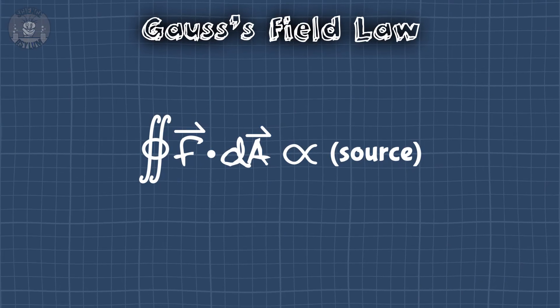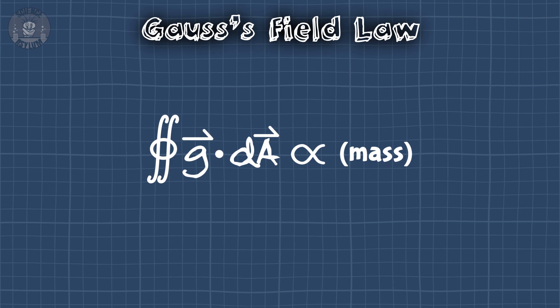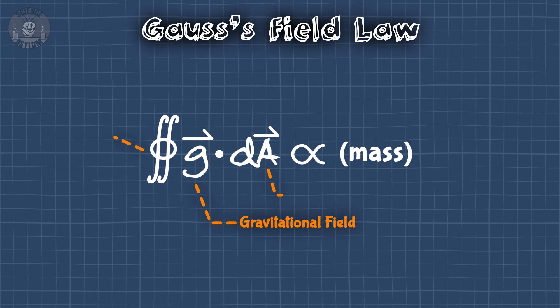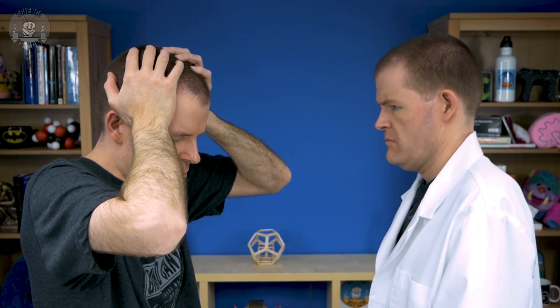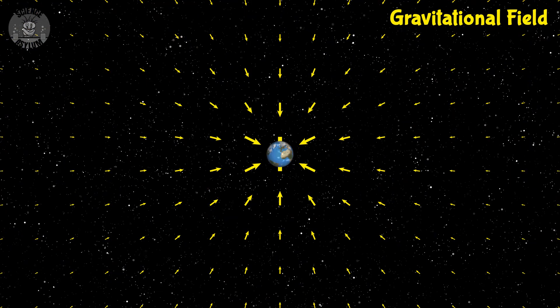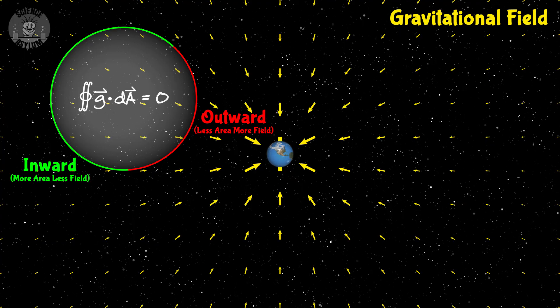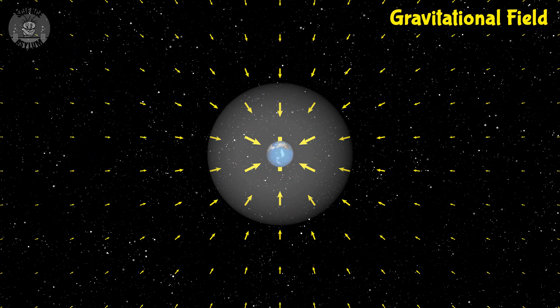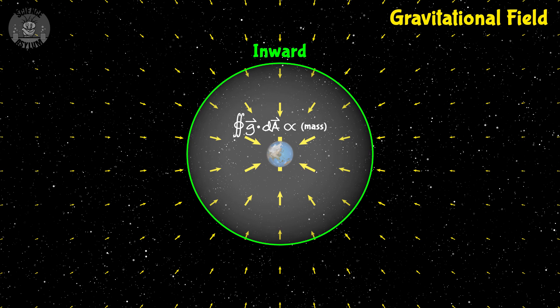A really convenient way to understand that connection is with Gauss's Law. In general, it's written like this — here's the field, a property of space, and here's whatever property is affecting that field. For gravity, it relates the gravitational field to mass. It says the gravitational field across some closed area, also known as flux, is proportional to the mass inside that closed area. Let's imagine that closed area is the surface of a sphere. If that sphere doesn't enclose any mass, then there's no flux across its surface — just as much field pointed in as pointed out. If the sphere does enclose mass, then there's an overall inward flux: more field pointed inward than outward, which is true no matter how big the sphere is. Even if you don't know where the mass is, the field's behavior tells you where the mass is and how much there is.